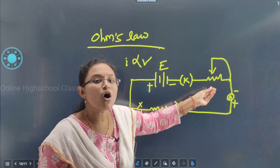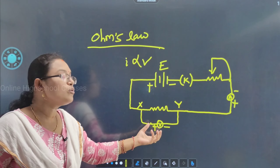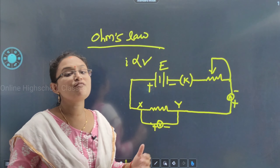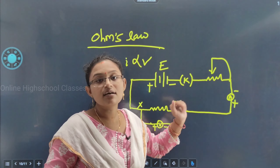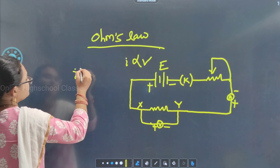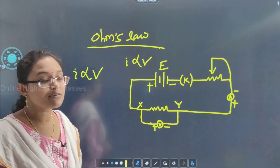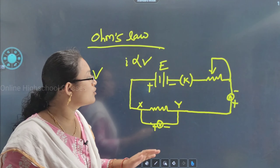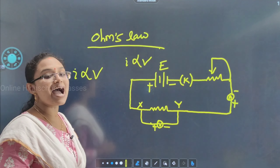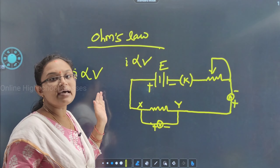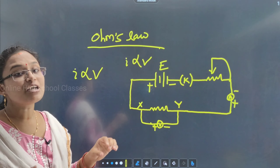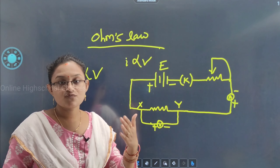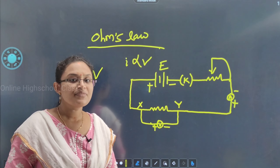If we change the position of the rheostat, then we can find out the value of current for different values of potential. By changing the rheostat, we obtain I directly proportional to V. Whenever potential increases, current also increases.